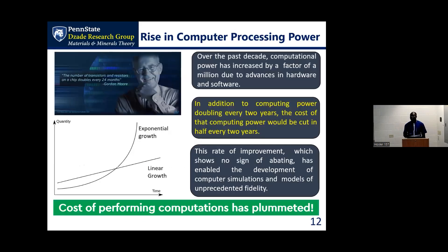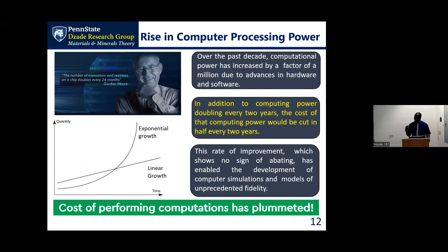This is all driven by the fact that computer processing power has significantly and exponentially increased over the years. Moore's Law says that the number of transistors on a chip would double every 24 months — and this exponential growth continues. These days we have laptops that can process a wide range of processes. As computer processing power increases, the cost of performing computational experiments is plummeting. It's now much cheaper to do computationally what experiments would take months to give you — computers can give them to you in split seconds.